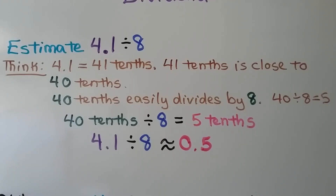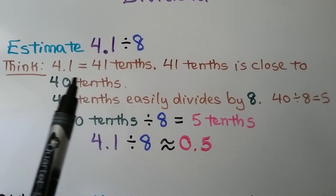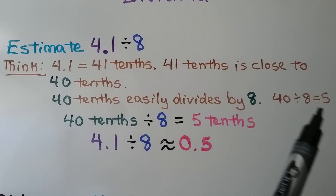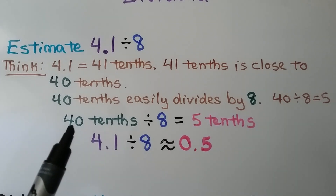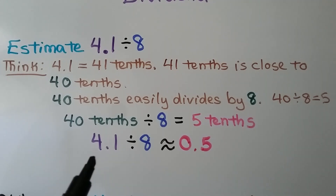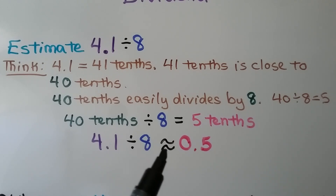We need to estimate 4 and 1 tenths divided by 8. We see that the whole number 4 is less than the divisor 8. We think 4 and 1 tenths equals 41 tenths, and 41 tenths is close to 40 tenths. We think 40 divided by 8 equals 5, so 40 tenths divided by 8 equals 5 tenths. Therefore, 4 and 1 tenths divided by 8 is approximately 5 tenths.